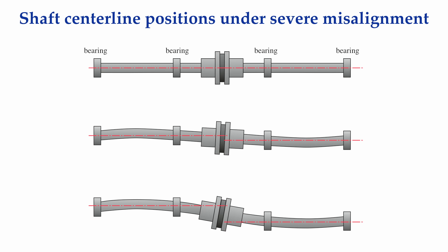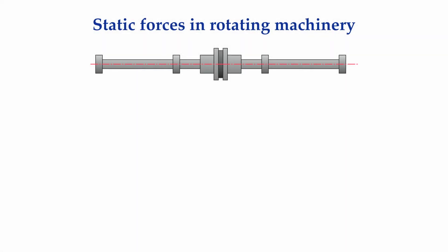If the shafts were perfectly balanced before they were misaligned, they are perfectly balanced now also. The center of mass at every point along the elastically curved shaft is still coincident with the center line of rotation at every point along the shaft. If we disengage the coupling in the extreme misalignment conditions, each shaft would spring back to the dashed red lines which define the center line of the two bearings that support each shaft.